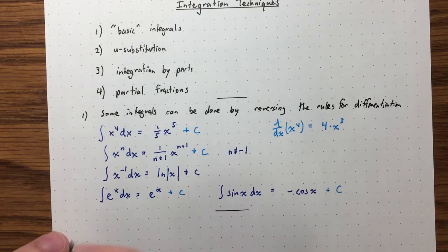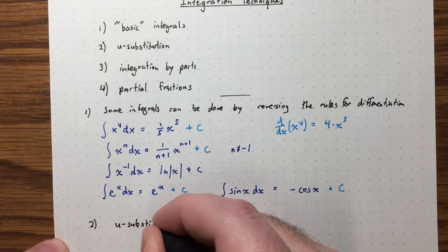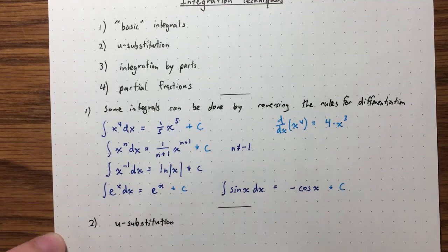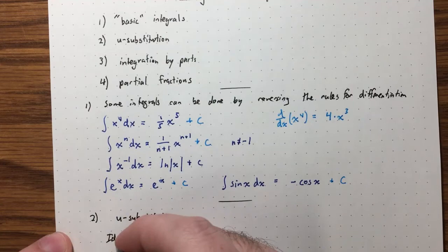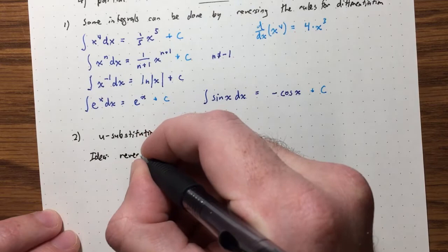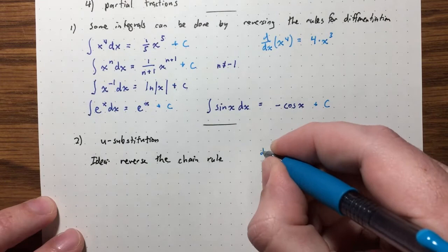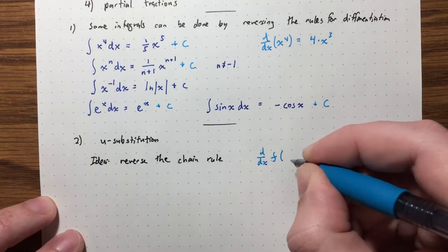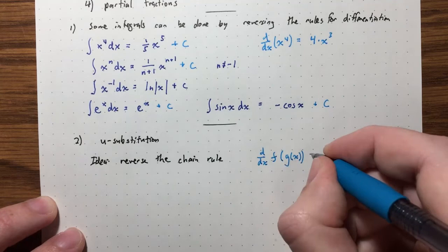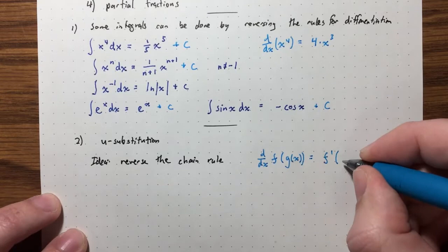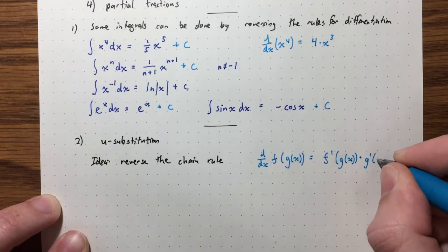Our next method is U-substitution. This is a very general method. The idea behind U-substitution is to reverse the chain rule. The chain rule tells you how to take the derivative of a composition of functions. If we have a composition f composed with g, the derivative is the derivative of f — treating g as the variable — multiplied by the derivative of that inner function g with respect to x.